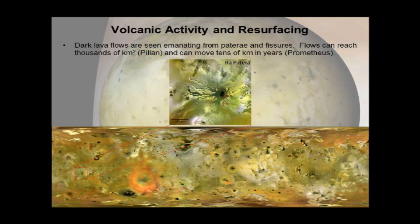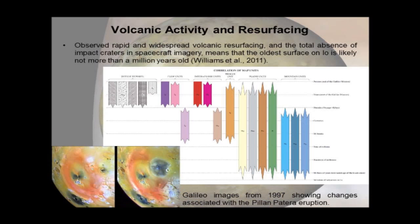In addition to plume deposits, we see dark silicate lava flows on IO's surface that can reach thousands of kilometres squared in area and have been seen to move several kilometres over a matter of years. As a result of all this resurfacing, IO has a very young surface — not a single impact crater of any size has ever been spotted. The oldest surface discernible from stratigraphy in Dave Williams's 2011 geological map is only millions of years old.